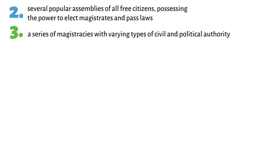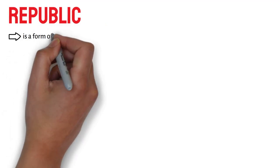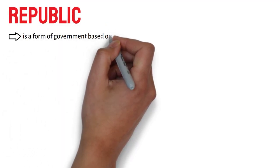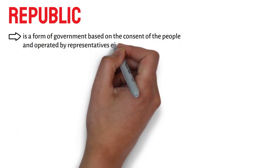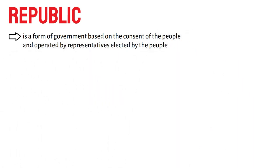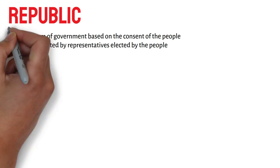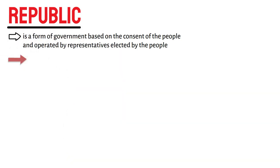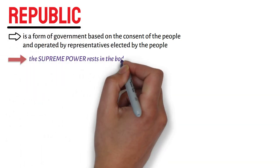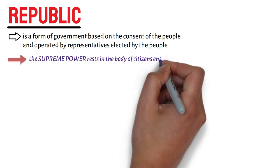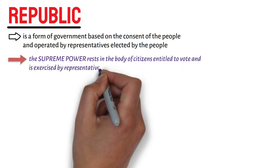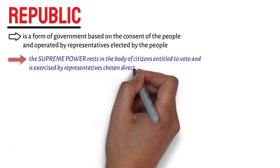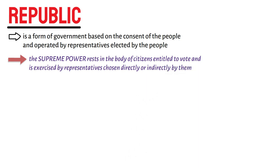Formally defined, a republic is a form of government based on the consent of the people and operated by representatives elected by the people. In other words, in a republic, the supreme power rests in the body of citizens entitled to vote and is exercised by representatives chosen directly or indirectly by them.